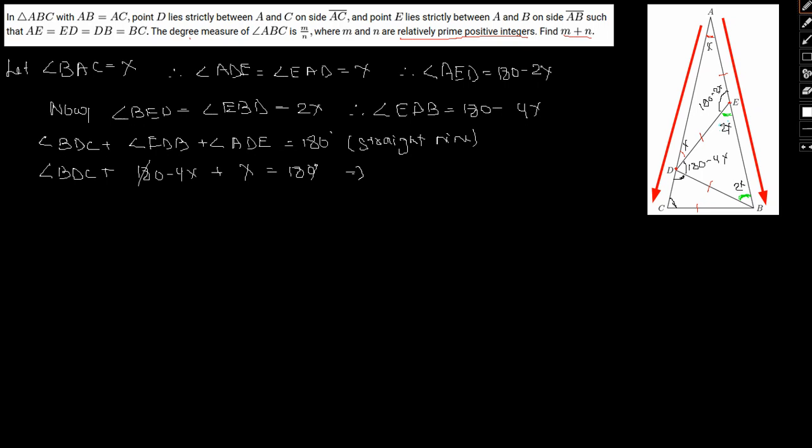So what is angle BDC? We have to find out. And EDB we have is 180 minus 4X, and ADE is X. Equal to 180 degrees. So therefore, we can conclude angle BDC is 3X which will be equal to angle BCD.